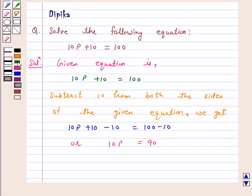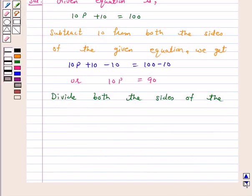Now, divide both sides of the above equation by 10. By doing so, we will get p on the left hand side.